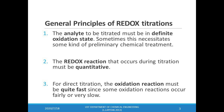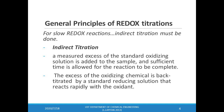The third principle is that for a direct titration, the oxidation reactions must be quite fast, because some oxidation reactions are very slow. In case we have a slow redox reaction, direct titration is not the best choice. Instead, we perform an indirect titration. During an indirect titration, a measured excess of the standard oxidizing solution is added to the sample, and sufficient time is allowed for the reaction to be complete. The excess of the oxidizing chemical is then back-titrated by a standard reducing agent that reacts rapidly with the oxidant.